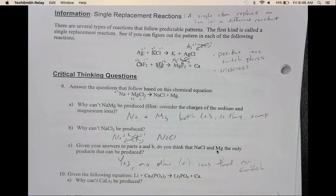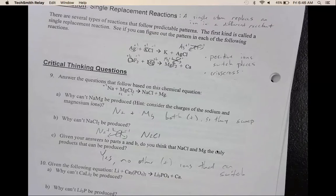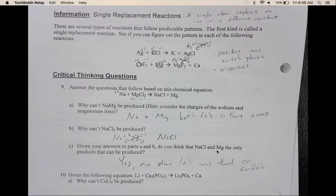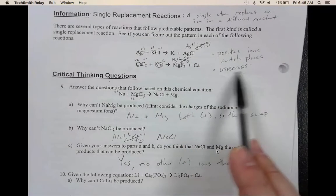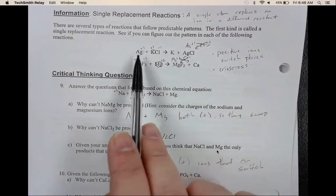So the same charge of the ion trades places. In this case, they're all positive. I'm pretty sure in this packet we're all dealing with positive. On the practice, there are some negative ions. If there's two negative ions, then the two negative ions switch places. We still need to follow all of the ionic bonding rules. And then when we switch places, make sure that we crisscross.